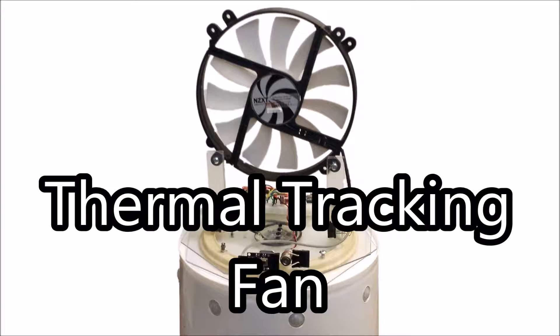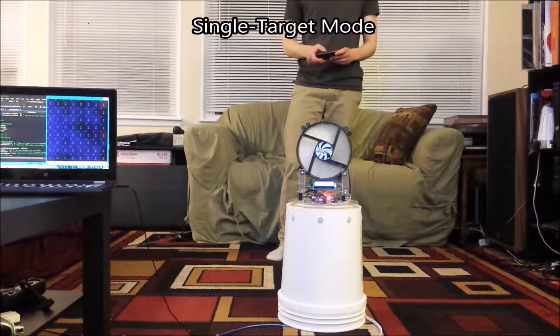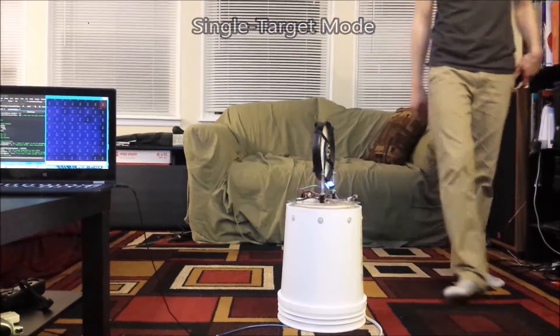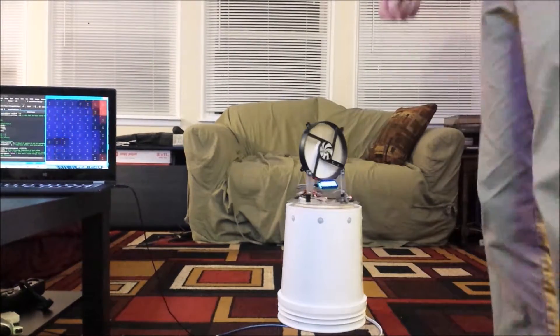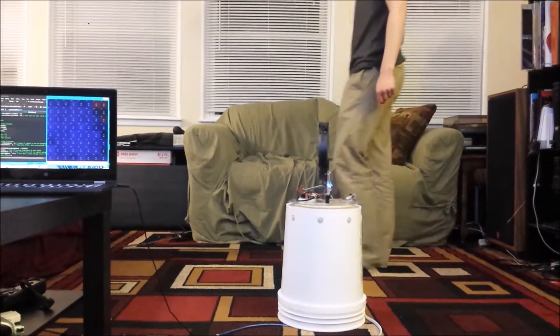This project is a 360-degree passive thermal tracking device. Single target mode simply follows the target as they move about the room. The 8x8 pixel thermal array sensor known as the Grid Eye can be visualized on the laptop screen to the left.